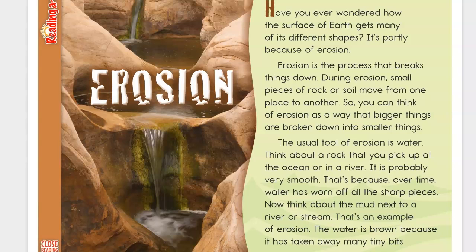Erosion. Have you ever wondered how the surface of Earth gets many of its different shapes? It's partly because of erosion. Erosion is the process that breaks things down. During erosion, small pieces of rock or soil move from one place to another. So you can think of erosion as a way that bigger things are broken down into smaller things. The usual tool of erosion is water.